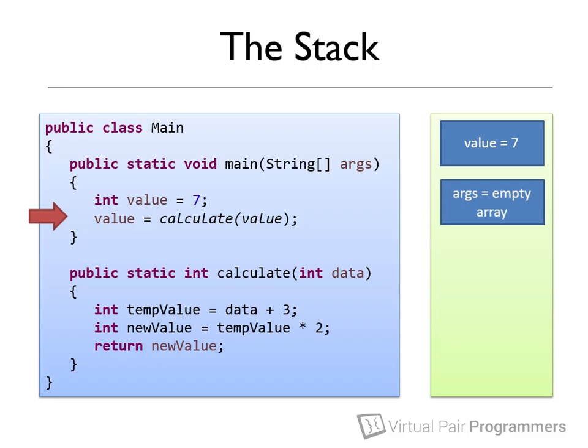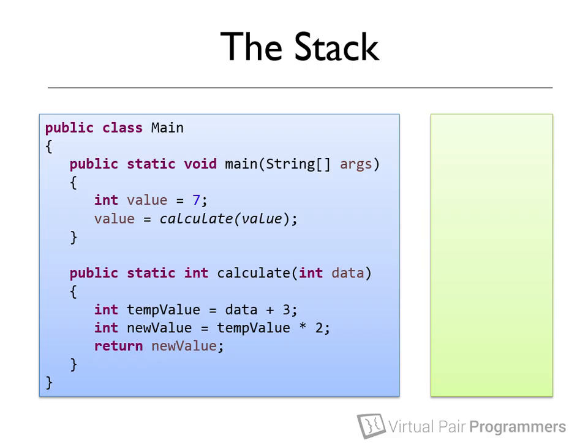This means that we've restored the stack to exactly the same state as it was before the method was called. Back in the main method, the value variable is reassigned with whatever was returned from the method — so the value changes to 20. We're now at the final closing bracket for our program, the thread is completed, and at this point our stack will be empty. Whenever you reach a closing curly bracket, any local variables declared inside the block you're leaving are popped off the stack and destroyed. It's not just when you return from a method — it's every time you exit a code block. And that is how scoping works.